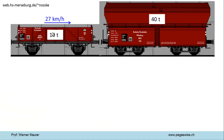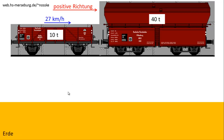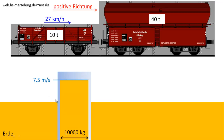Nun schauen wir uns das Beispiel aus dem Vorspann noch einmal an: Ein Güterwagen prallt gegen einen ruhenden. Reibung ist zu vernachlässigen. Wir führen eine positive Richtung und übersetzen die Situation ins Flüssigkeitsbild. Im Flüssigkeitsbild ist der Impuls eine schwere Flüssigkeit, und die Erde wird zu einem riesigen See, mit dem man beliebig viel Impuls austauschen kann. Der Körper wird zu einem zylinderförmigen Topf mit der Masse als Querschnitt und der Geschwindigkeit als Füllhöhe. Damit können wir den Inhalt rechnen mit der Formel Querschnitt mal Füllhöhe, was 75.000 kg·m/s ergibt.